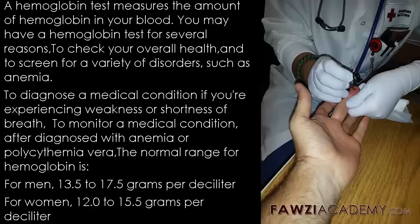To monitor a medical condition after being diagnosed with anemia or polycythemia vera. The normal range for hemoglobin is, for men, 13.5 to 17.5 grams per deciliter; for women, 12.0 to 15.5 grams per deciliter.